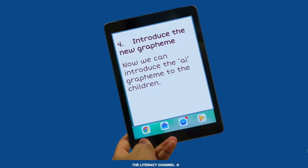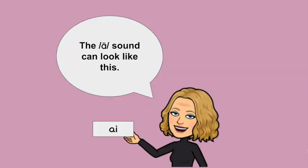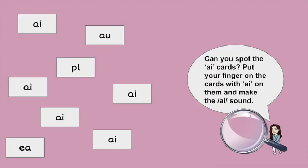Now, after lots of sound work, it's time for the grapheme. Show the children what it looks like and say something like, 'The A sound can look like this.' The emphasis here is on the word 'can', as the A can be represented in a number of different ways. Following that, you could put a range of flashcards with the letters on the screen and see if the children can find the A cards — encourage them to touch the screen.